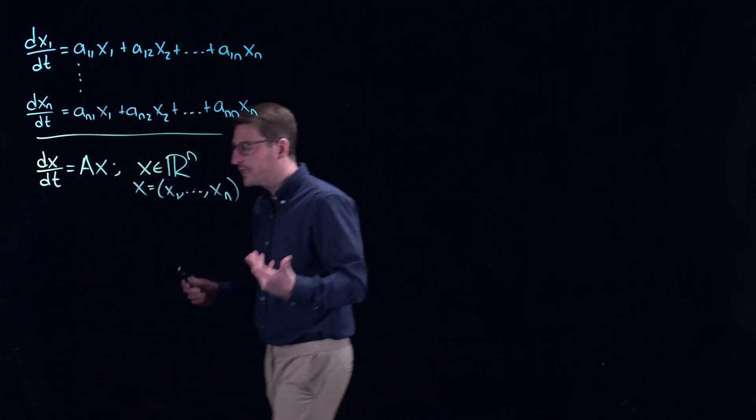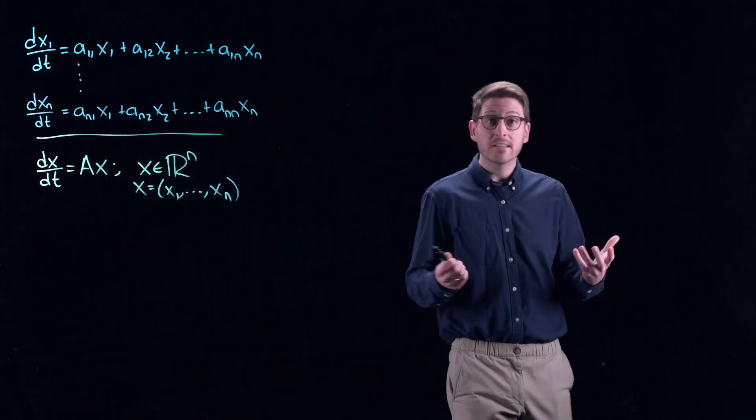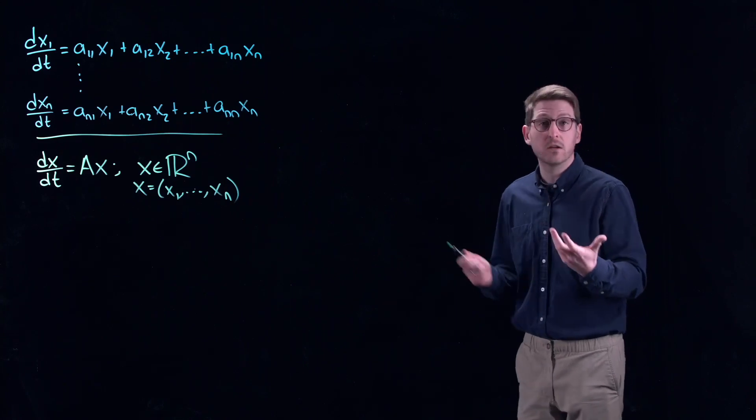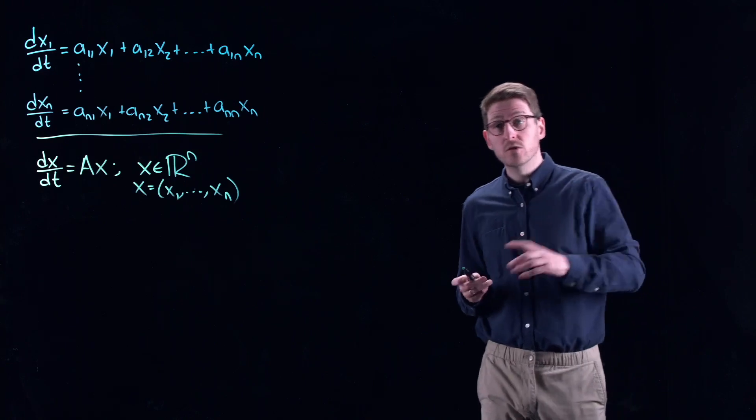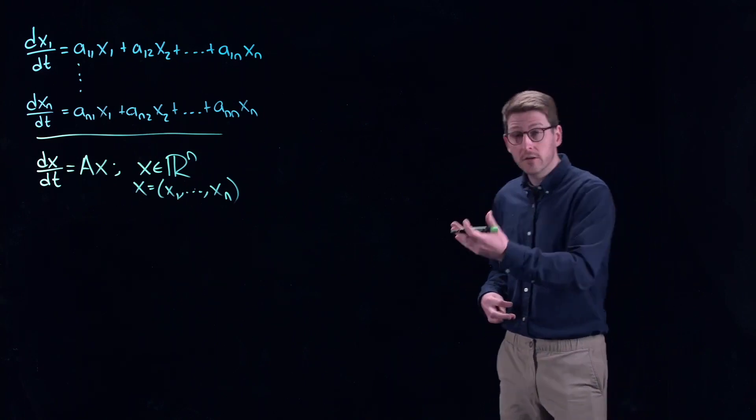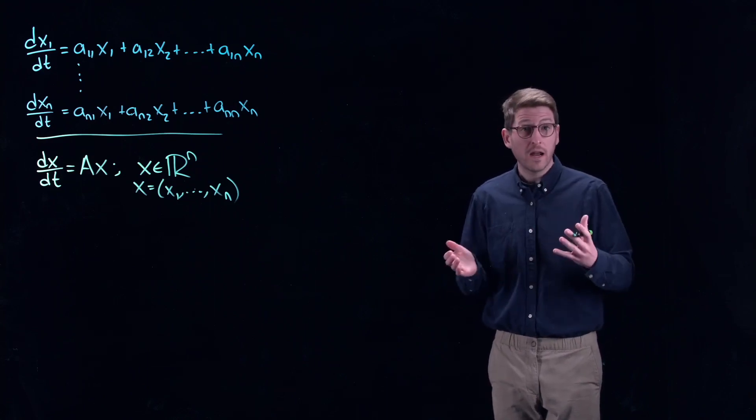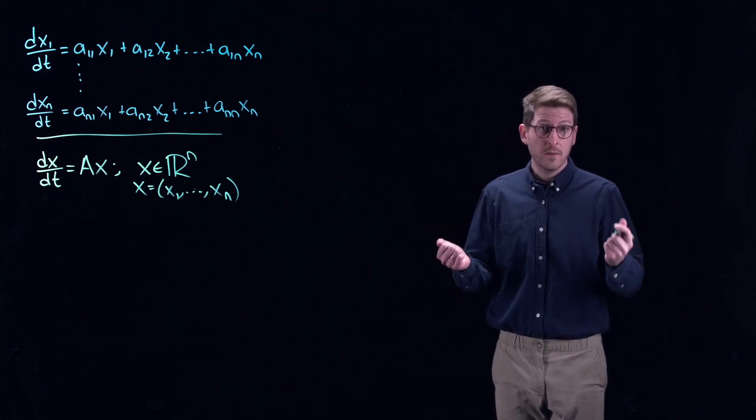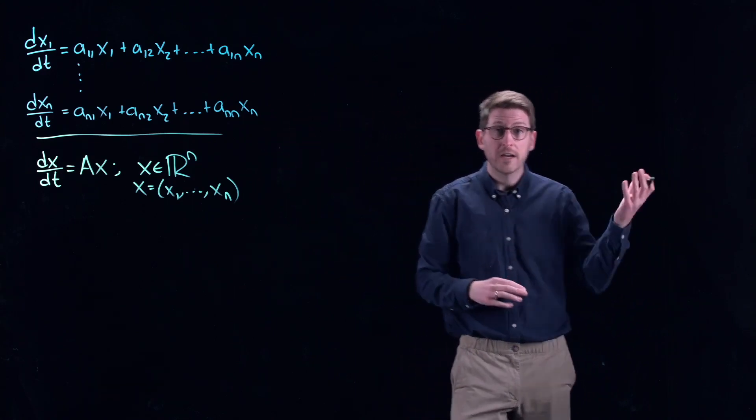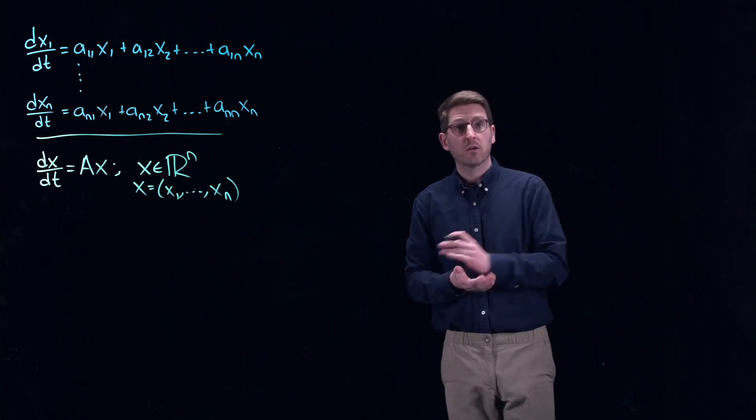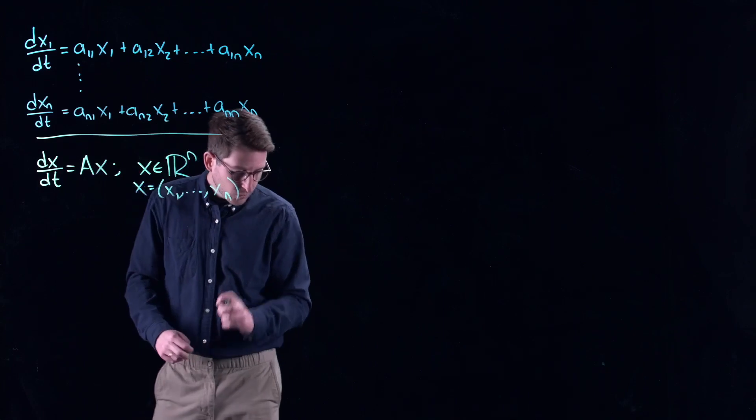The nice thing about linear systems, much like a linear programming problem, is that we can answer it explicitly - we know exactly what the solutions to this differential equation look like. This is contrary to a lot of the systems that we have already looked at and those that we will continue to look at, because nonlinear systems we don't have exact answers to. But it turns out that having a good understanding of linear systems can help us or provide us with an intuition about what's going on with nonlinear systems.